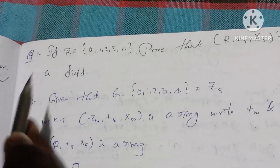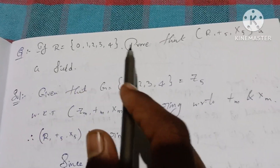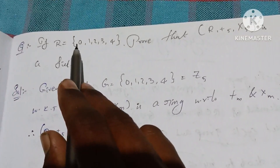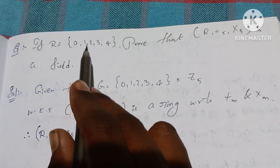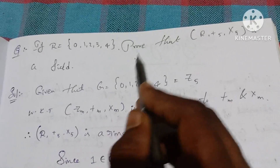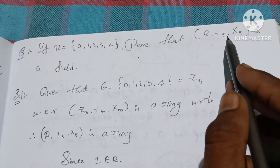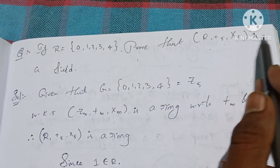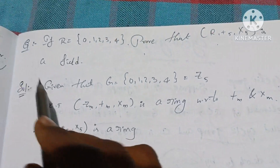Second question: if R is equal to the set {0, 1, 2, 3, 4}, prove that (R, +5, ×5) is a field.